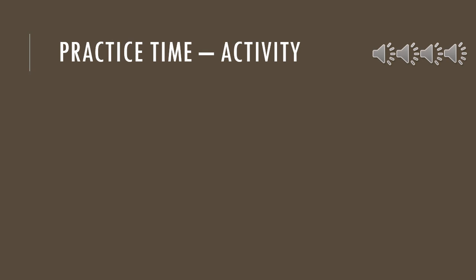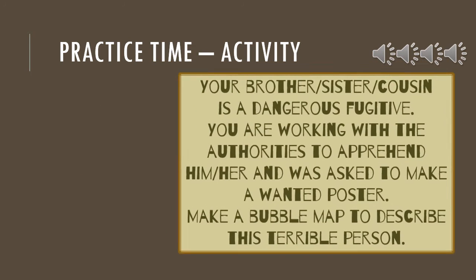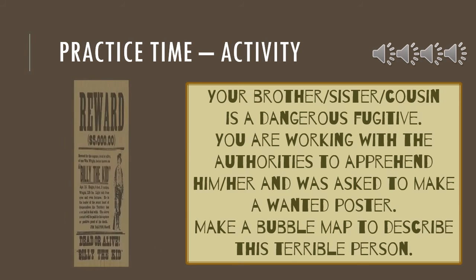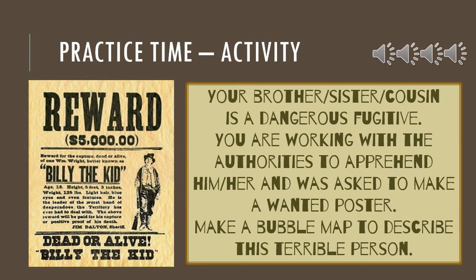Let's do a fun activity to practice making a bubble map specifically for the purpose of describing. Your brother, sister or cousin is a dangerous fugitive. You are working with authorities to apprehend this person. You were asked to make a wanted poster. Make a bubble map to describe this terrible person. Include all the words that would describe him or her. Remember to use as many adjectives and adverbs as you can think of, and describe this person inside and out — what he or she looks like physically, as well as what kind of person he or she is.